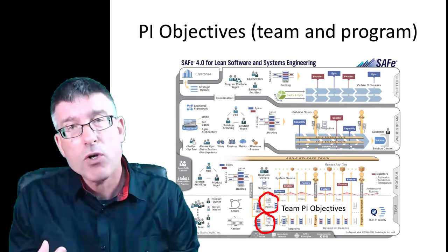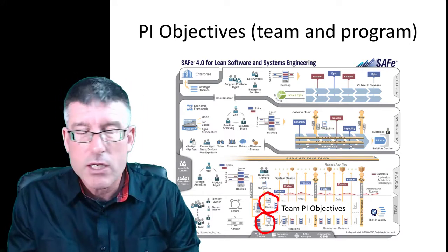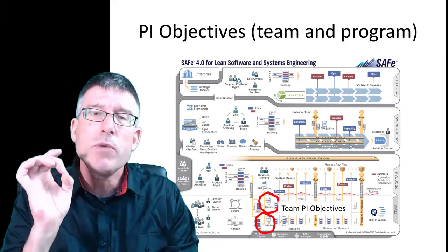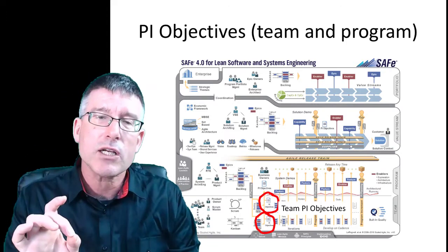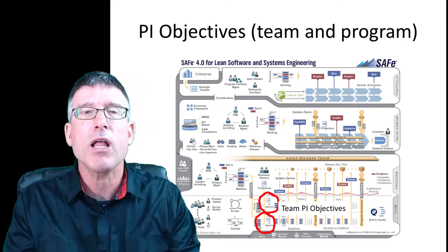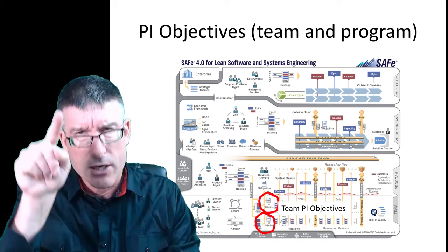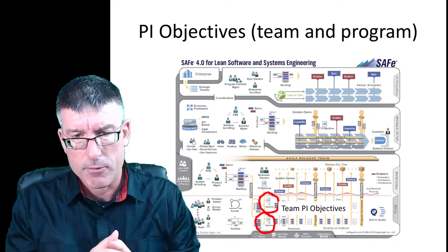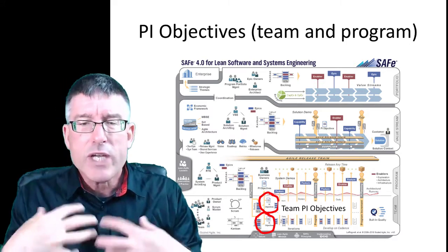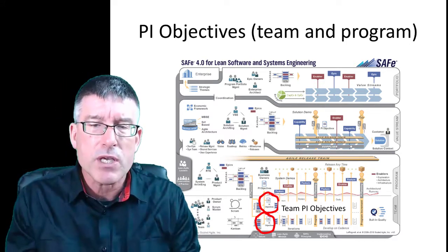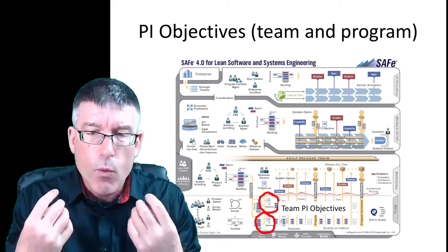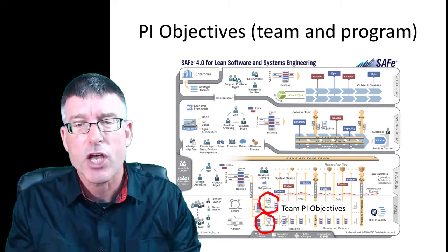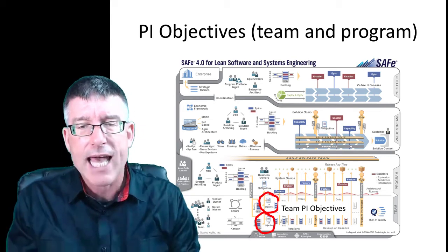A lot can happen over two months. There can be new ideas, we can get sideswiped, there can be issues. So the team is not committing to a specific set of user stories and features — they're committing to the objectives they create out of those features and user stories. The team is building a plan that says: from this plan, here are the objectives we want to reach, and we have a plan that shows we can reach that.